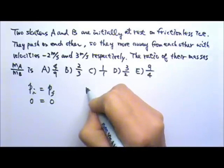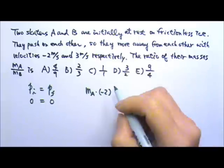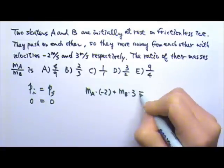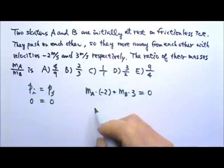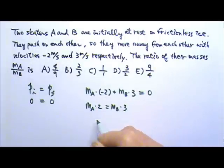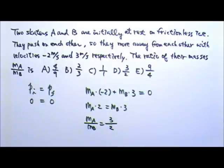So MA times negative 2 equals MB times 3. So the ratio of the mass must be 3 to 2. If you move the B to this side and 2 to this side, that's what we get. So the answer is D.